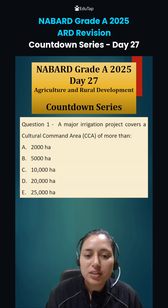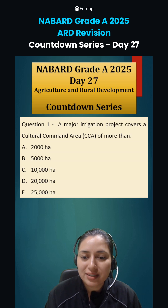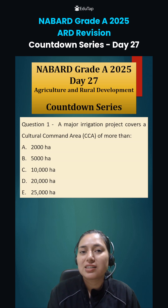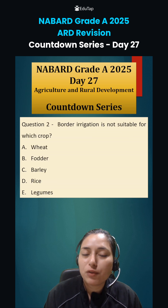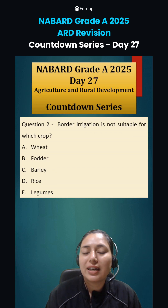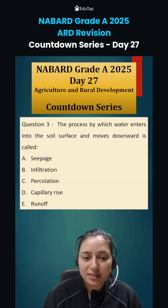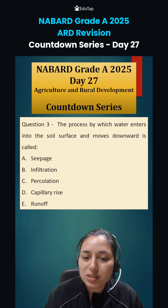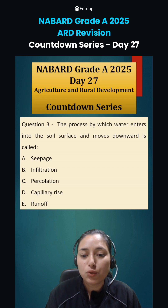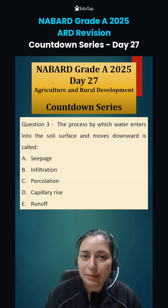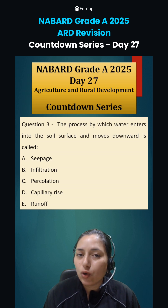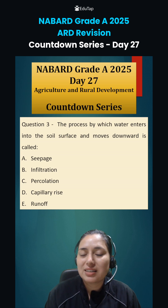Now let's look at the questions for Day 27. The first question is: a major irrigation project covers a cultural command area of more than — very important, this has been asked in examinations previously. The second question is: border irrigation is not suitable for which crop? Carefully understand what border irrigation is and which crops can be grown under it, then give the answer. The third question is: the process by which water enters into the soil surface and moves downward is called — again a previous year question. Carefully read all the options and give your answers in the comment section.